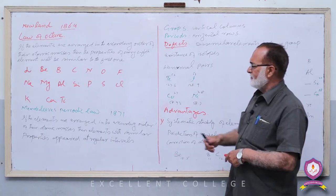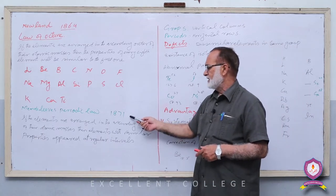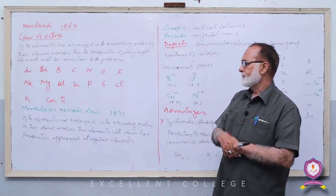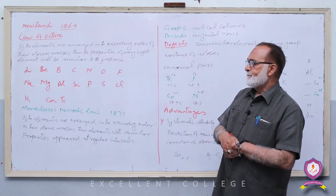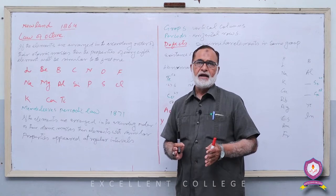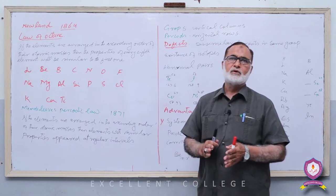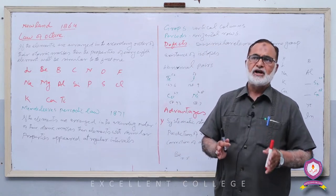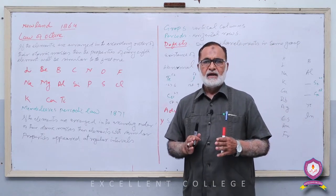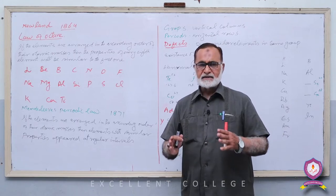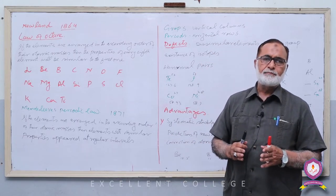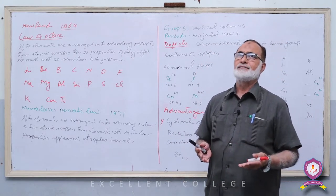یہ تیسری attempt تھی جو Newlands نے 1864 میں propose کی۔ اس کے چھ سال بعد 1871 میں Mendeleev نے elements کو groups اور periods کی صورت میں arrange کیا اور اپنا Periodic Table ترتیب دیا۔